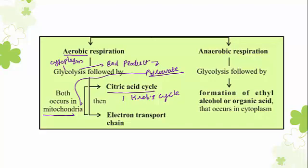After the Krebs cycle, it undergoes the electron transport chain. When the entire process is completed, at the end of aerobic respiration there is formation of 38 molecules of ATP — a very high amount of energy. Aerobic respiration begins with glycolysis in the cytoplasm, pyruvate moves to the mitochondria, undergoes the citric acid cycle or Krebs cycle, and finally enters the electron transport chain.